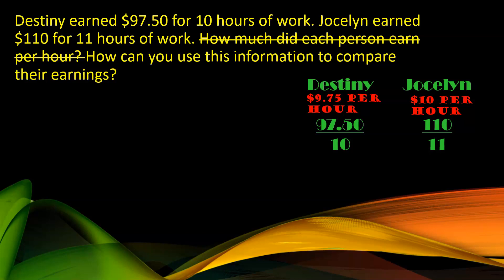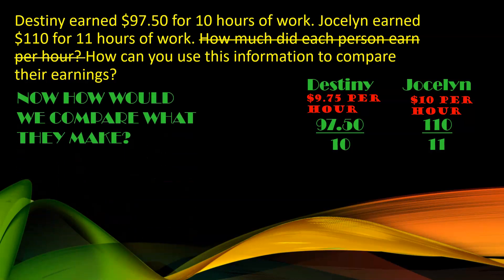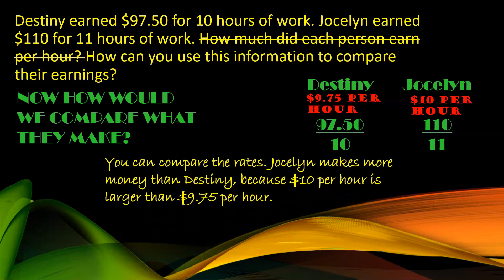Now we want to go to the second part: how can you use this information to compare their earnings? We want to look at the rate that each girl earned their money. You can compare the rates. Jocelyn makes more money than Destiny because $10 per hour is larger than $9.50 per hour.